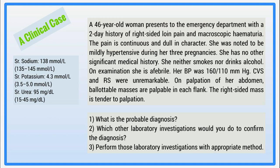Serum potassium 4.3 mmol/L is also in the normal reference range, so these two investigations are not deranged. Serum urea is 95 mg/dL, which is higher than normal. The questions are: what is the probable diagnosis, which other laboratory investigations would you do to confirm the diagnosis, and perform those laboratory investigations with the appropriate method. We are now going to answer these questions and identify the key factors in this clinical case to identify the probable diagnosis, then answer the further questions based on the case.